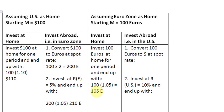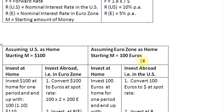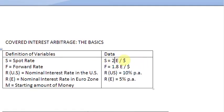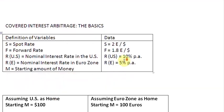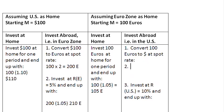Now if this person wants to take their money abroad to the US and invest it there, they will first have to convert 100 euros into dollars at the spot rate. The spot rate is 2 euros to a dollar. We are converting euros — the numerator currency — to dollars, the denominator currency, so we divide: 100 divided by 2 gives us 50 dollars.